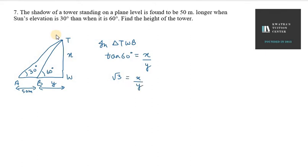Now, the other triangle is TWA. In triangle TWA, tan 30 degree will be x over 50 plus y. Tan 30 is 1 over under root 3 equal x over 50 plus y.